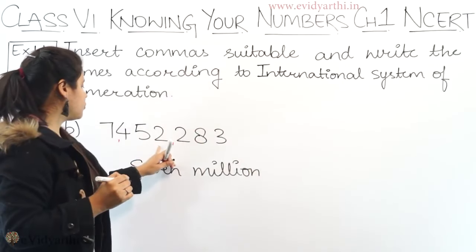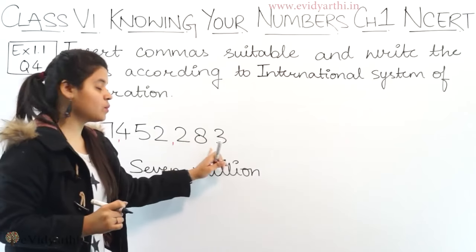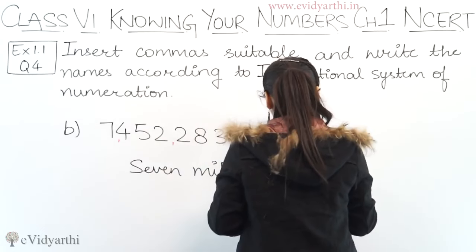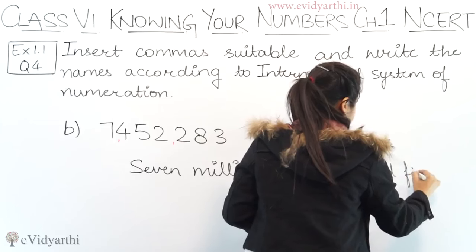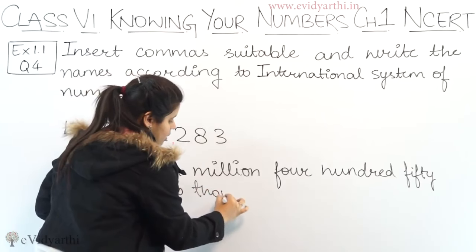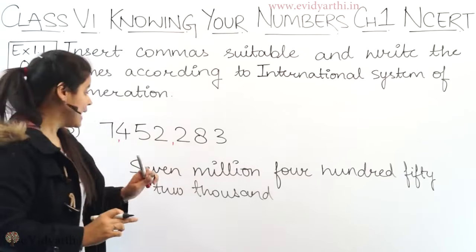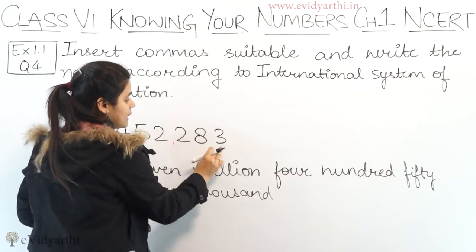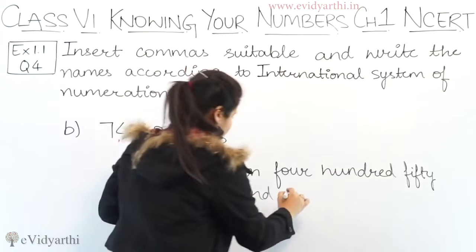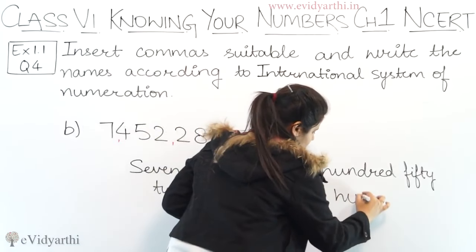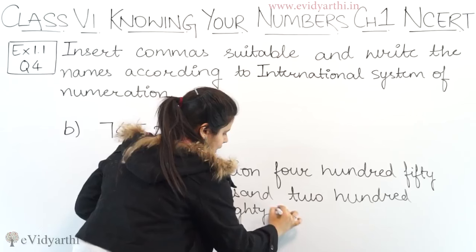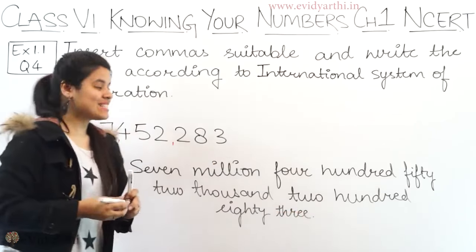Next, we have 452. After 452, there are 3 more digits, which means thousand. So this will be 452 thousand. After this we have the last part, 283. So we write the full number as 7,452,283. That was part B.